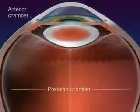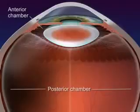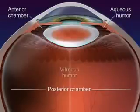The chambers are filled with a watery fluid that gives shape to the eye and helps refract the light rays. The anterior fluid is called the aqueous humor, and the posterior fluid is called the vitreous humor.